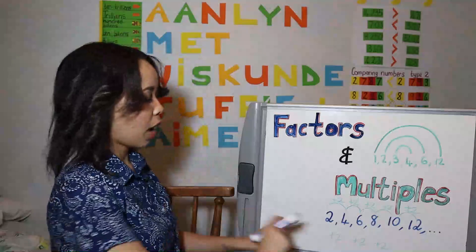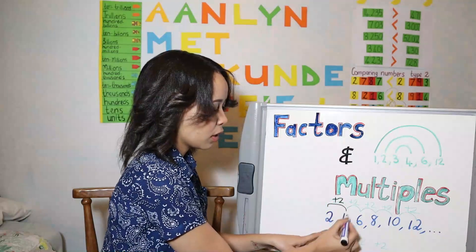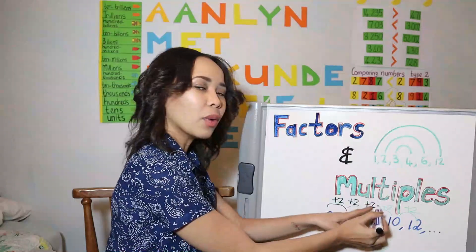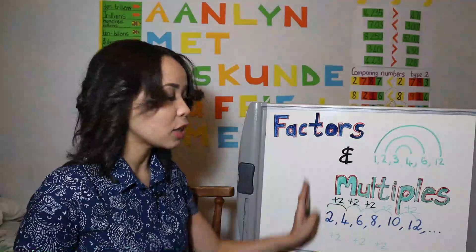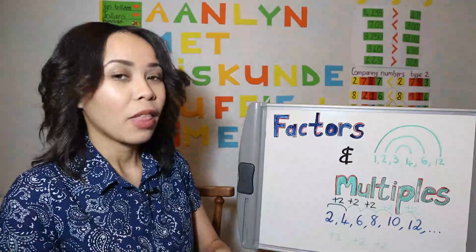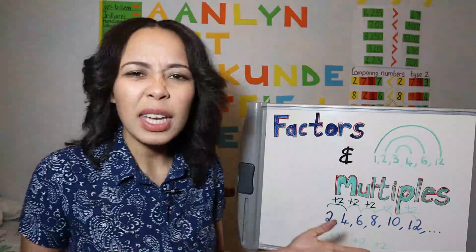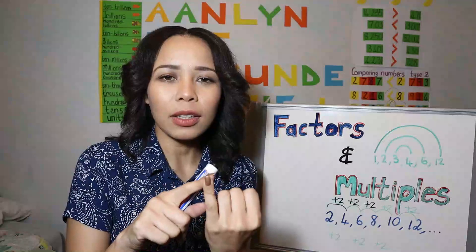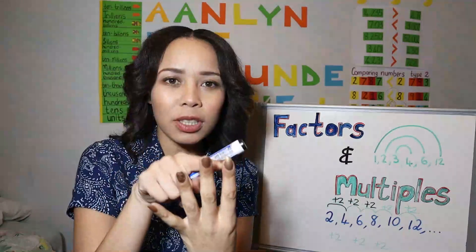So let's look at the multiples of two. I will start with two, then I add another two and I will have four, plus another two and I will have six, plus another two and I will have eight. So I started with two and I kept on adding two to get to the next number. Let's look at multiples of 10: I start with 10 and keep on adding 10 — so 10, 20, 30, 40 and so forth.